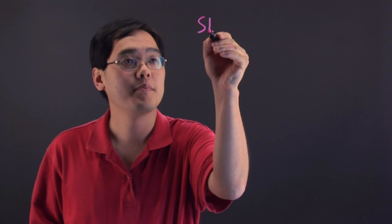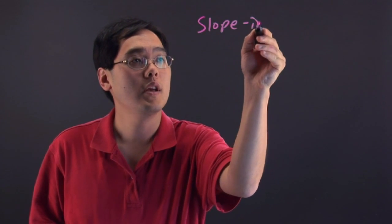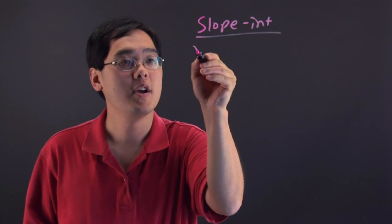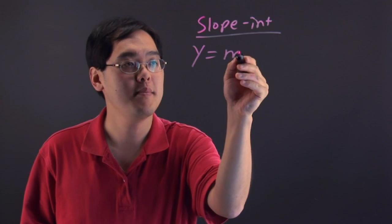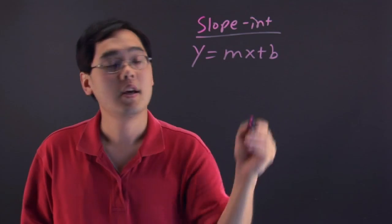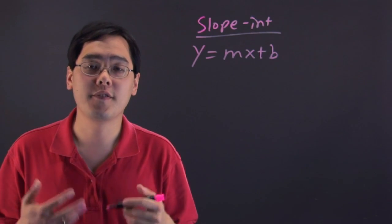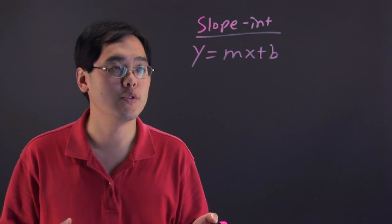The slope-intercept form is always of this particular form: y equals mx plus b. It may not mean a whole lot to you if you're not sure what the letters are, but let's go into it a little bit further.